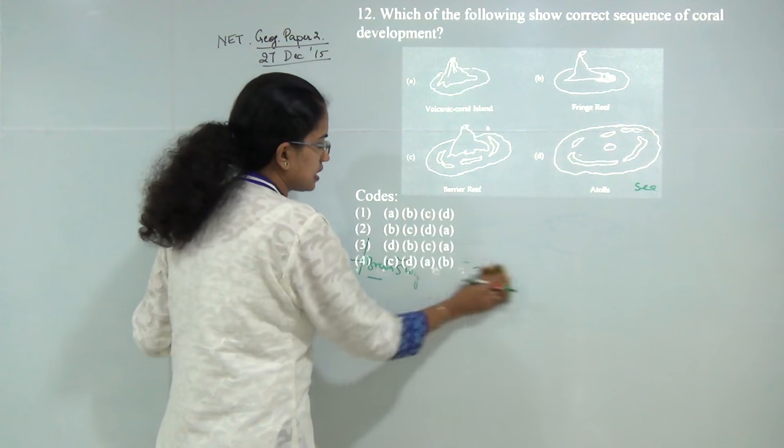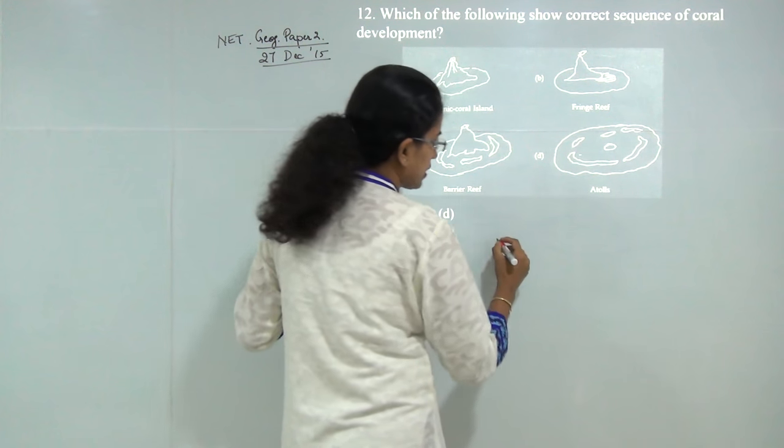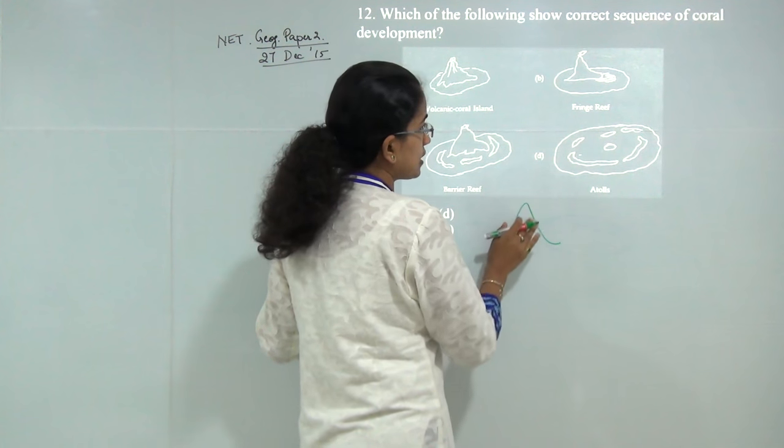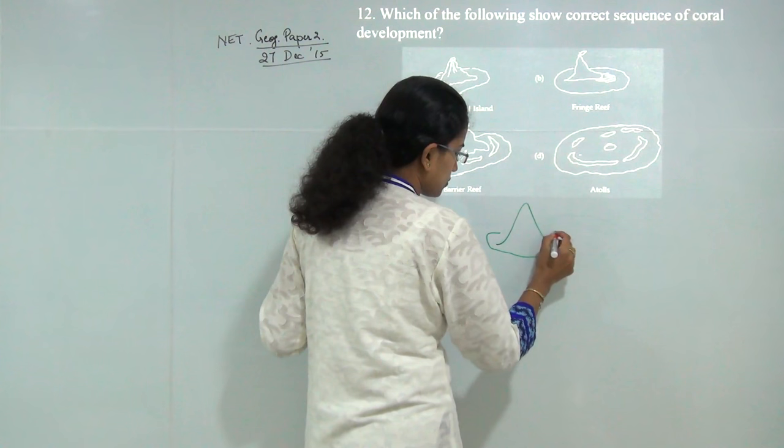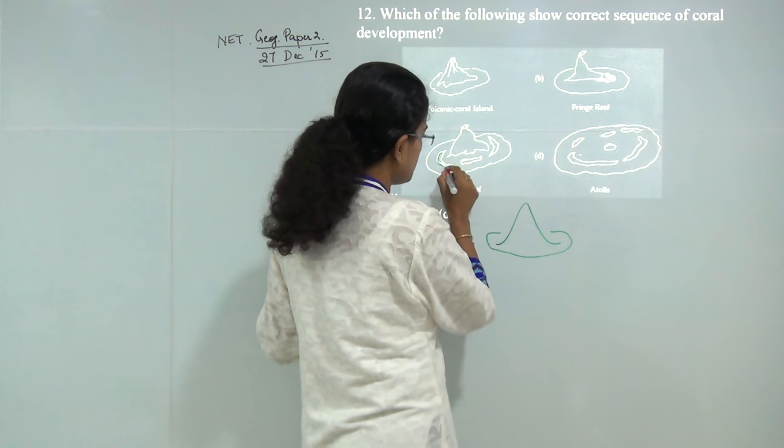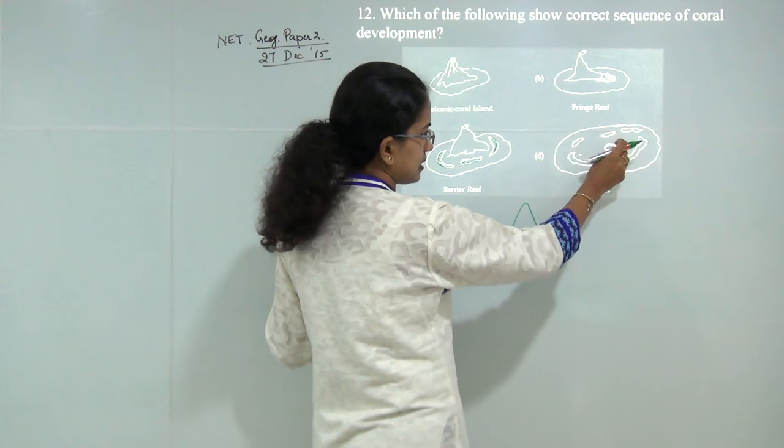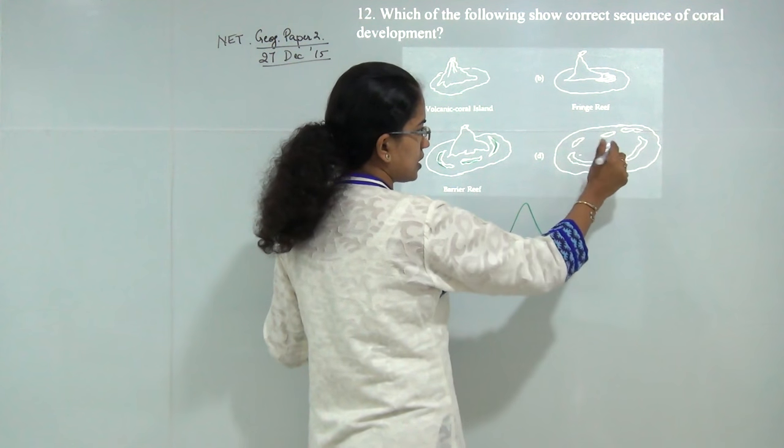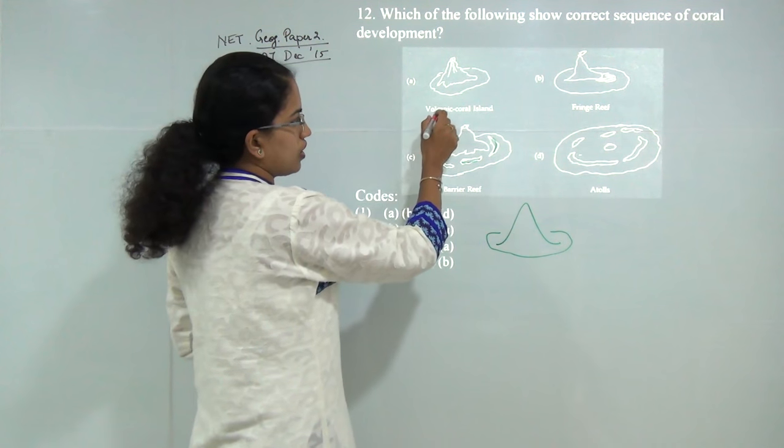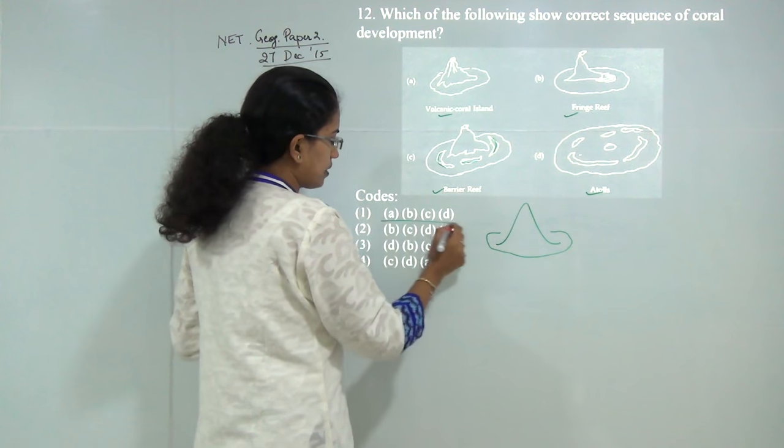Now: what is the correct order of development for a coral reef? The most commonly propounded theory is: you have a volcanic mountain that slowly subsides, and fringing reef forms around it. It further subsides forming barrier reef, and finally with sea level rise, the volcanic island totally disappears forming an atoll. The correct order is: coral island, fringing reef, barrier reef, and atoll—A, B, C, D.